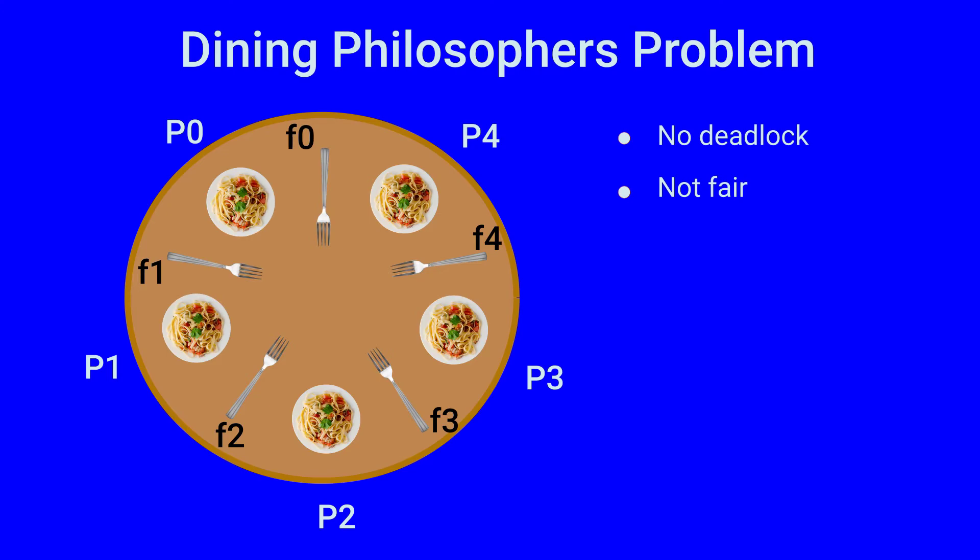So p0 still can't eat. And just when p4 was about to release fork, p1 started eating again. So p0 goes hungry till both p1 and p4 stop eating.